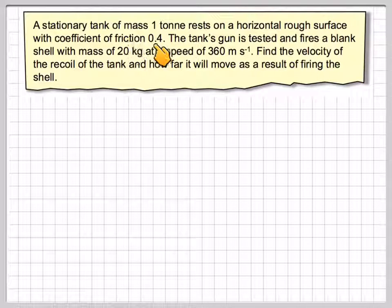A stationary tank of mass 1 ton rests on a horizontal rough surface with a coefficient of friction 0.4. The tank's gun is tested and fires a blank shell with mass of 20 kilograms at a speed of 360 meters per second. Find the velocity of the recoil of the tank and how far it will move as a result of firing the shell.